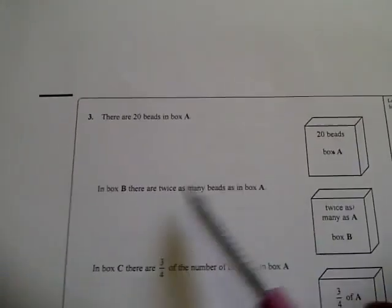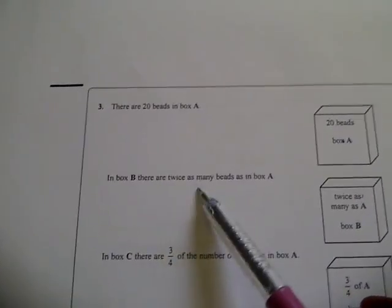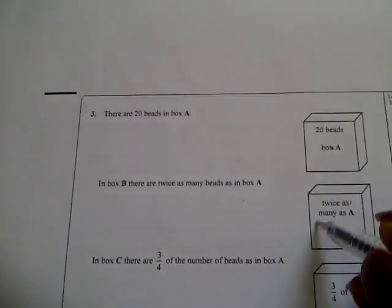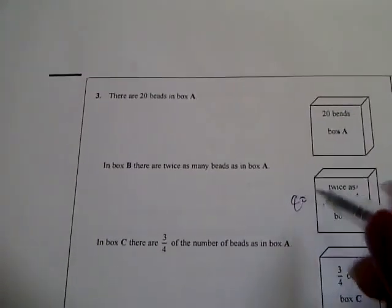Question 3 says there are 20 beads in box A. In box B there are twice as many beads as in box A, so box B is 40 because 2 times 20 is 40.